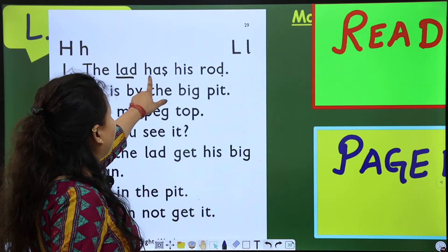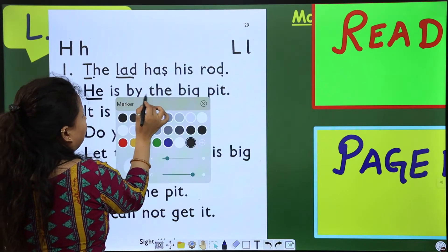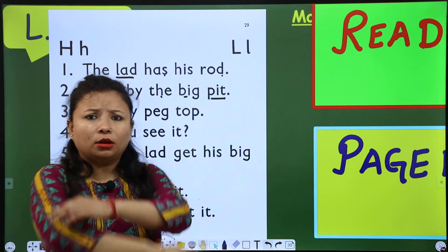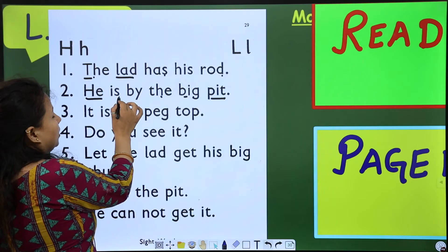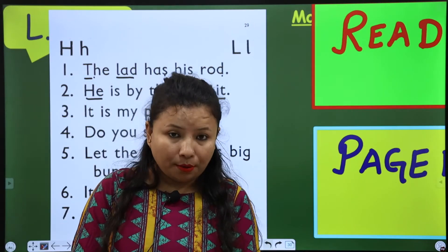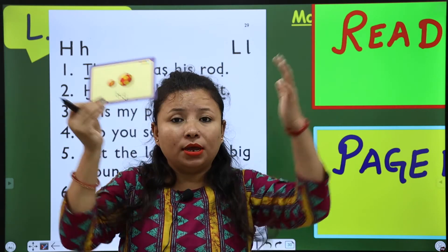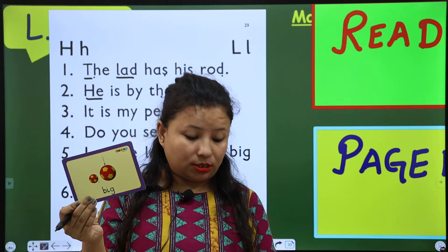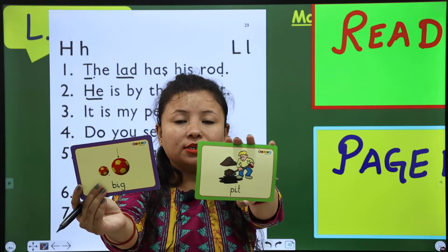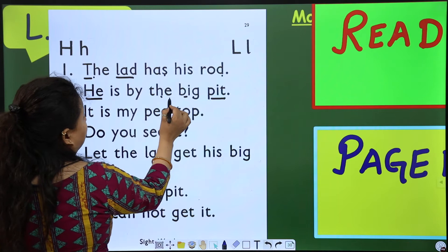So now: 'The lad has his rod. He is by the big pit.' We have told you about 'big' and 'pit.' Look at this — this is small, and this is big. And this is 'pit.' His name is E.